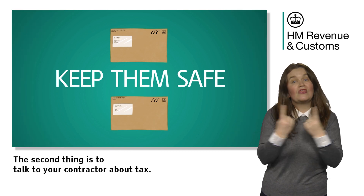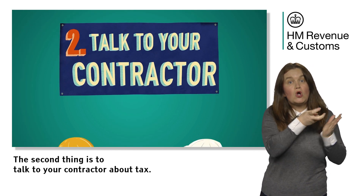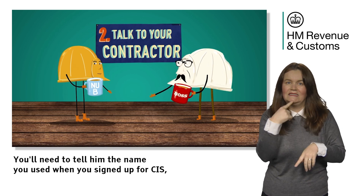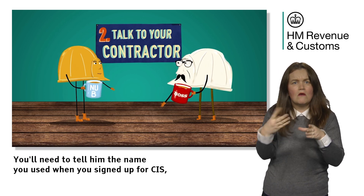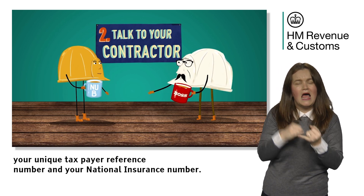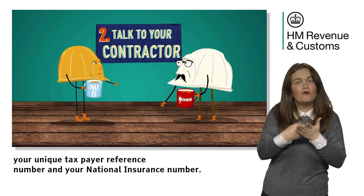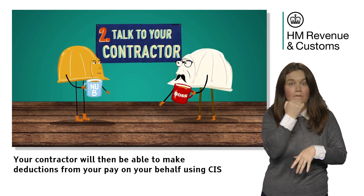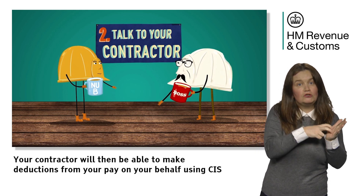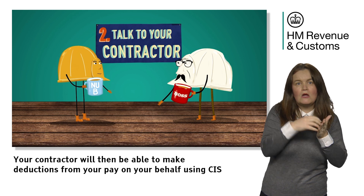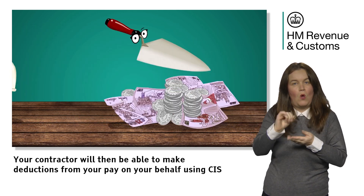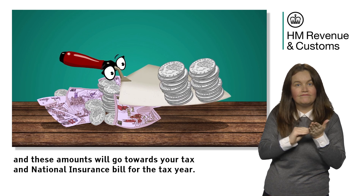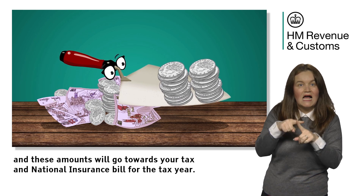The second thing is to talk to your contractor about tax. You'll need to tell them the name you used when you signed up for CIS, your unique taxpayer reference number and your national insurance number. Your contractor will then be able to make deductions from your pay on your behalf using CIS, and these amounts will go towards your tax and national insurance bill for the tax year.